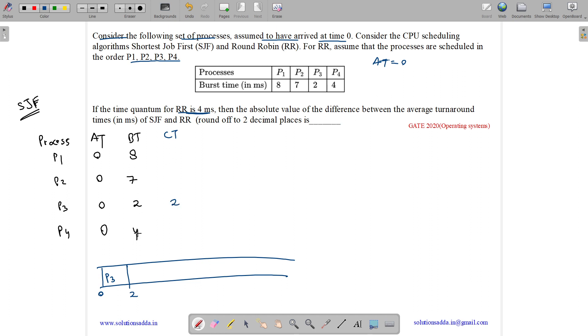Now at t equal to 2, we have P4, P1 and P2. Then we have P4 which has the least burst time of 4 ms. So 2 plus 4 is 6. P4 gets completed at 6.